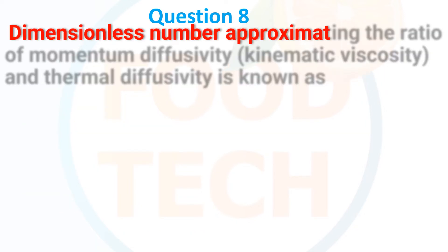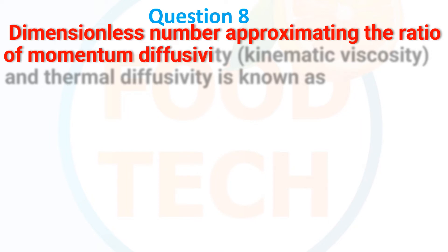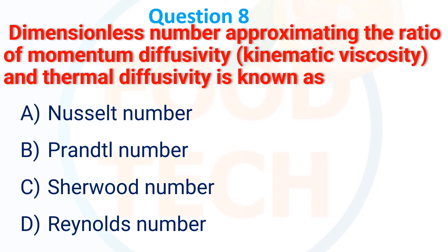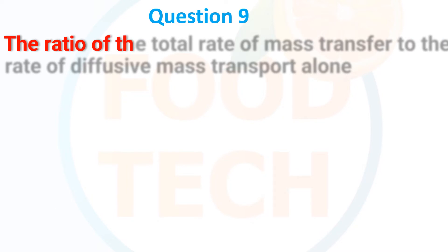Next MCQ: The dimensionless number approximating the ratio of momentum diffusivity (kinematic viscosity) to thermal diffusivity is known as what? Options: (A) Nusselt number, (B) Prandtl number, (C) Sherwood number, (D) Reynolds number. The correct answer is B — Prandtl number.